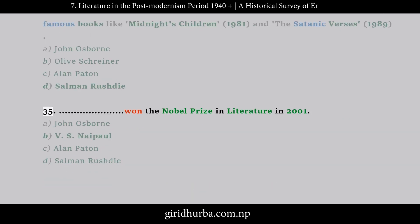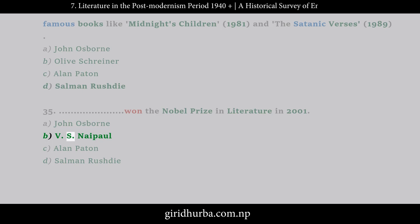Question 35: Who won the Nobel Prize in Literature in 2001? A. John Osborne. B. V.S. Naipaul. C. Alan Paton. D. Salman Rushdie.